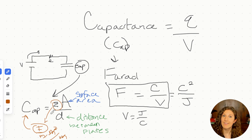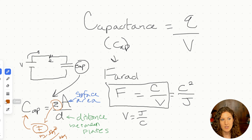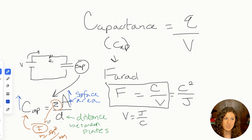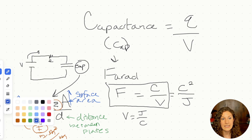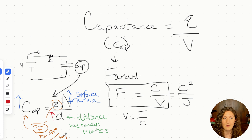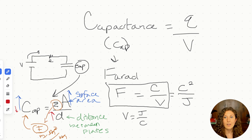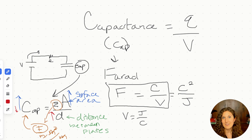You'll very rarely need to calculate with this equation. The more important thing is the conceptual relationships. If we increase the surface area of the plates, we increase capacitance. If we increase the distance between the plates, we decrease capacitance. To have the most efficient capacitor, we want lots of surface area and a very small distance between the plates.